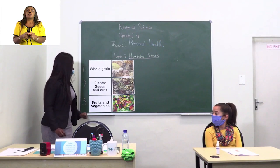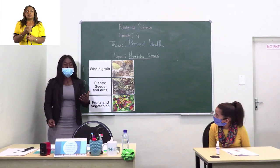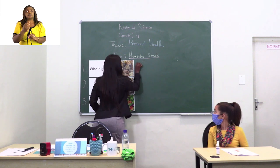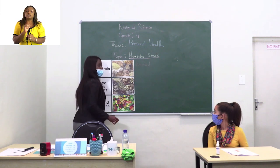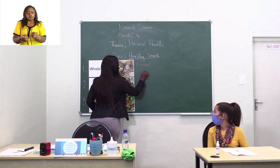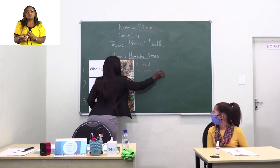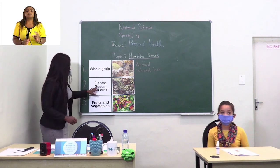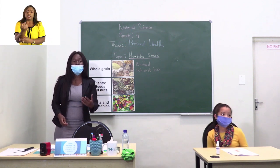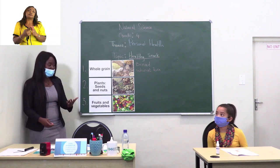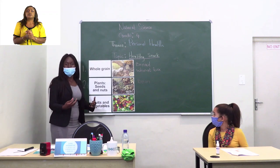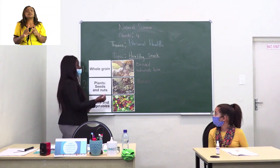Now let's look on the board. Whole grain — what are the examples of whole grain? We have bread; bread is made from whole grain. Plants that are seeds and nuts — think of any food that is made up of seeds or nuts. We have beans. What else do we have? And then the peanut.